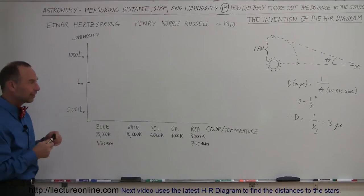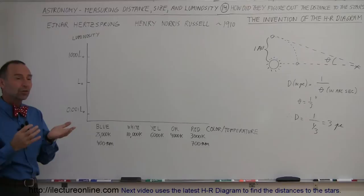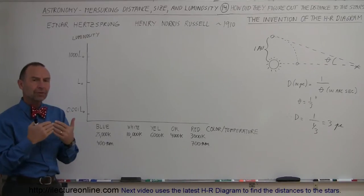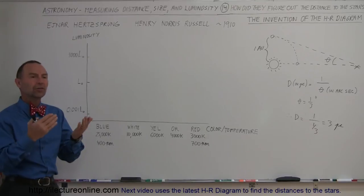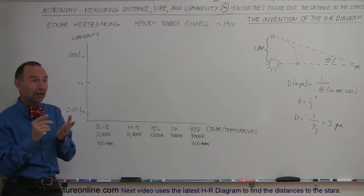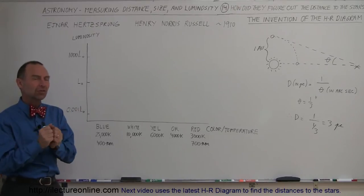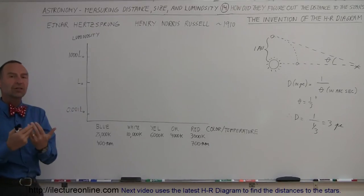So they were able to figure out the distance to the nearest 100 stars. Now once you know the distance of the star and you know the apparent magnitude or the apparent brightness of the star, you can actually figure out how bright the star really is, not the way it appears to us but the way it really is. You can actually figure out the luminosity of the star.